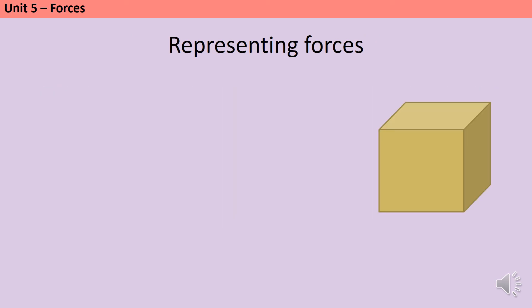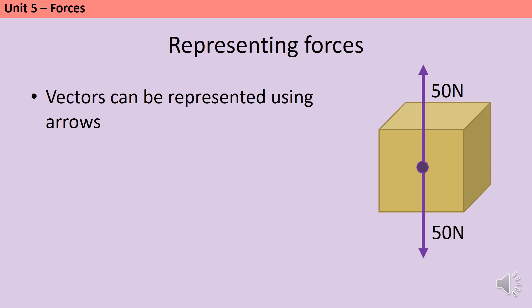When it comes to representing forces in diagrams, because force is a vector, I can represent it using arrows. Here's my box. And the box has a downward force acting on it of its weight and also an upwards force, the normal contact force from whatever it's sat on. Each one of these arrows represents a force of 50 newtons. And I can tell that the forces are the same size because the arrows are the same length. And this will always be the case. The length of the arrow represents the size of the force.